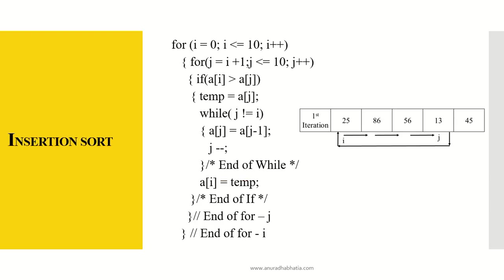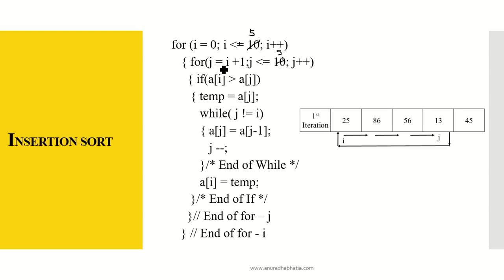Let's see the implementation of insertion sort. For i equals zero, i less than five, i plus plus — the outer loop. For j equals i plus one, j less than or equal to five, j plus plus — this is the inner loop that traverses the unsorted portion of the array.